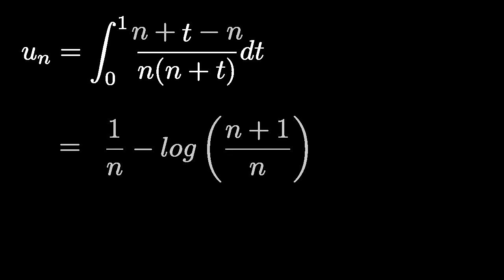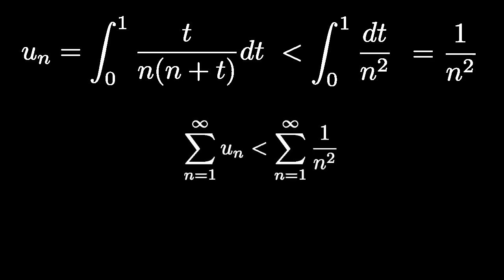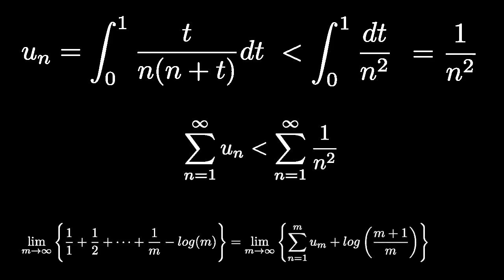Looking at the original definition of u_n, we see that u_n is less than 1 over N squared, and therefore the sum of u_n from N equals 1 to infinity converges. And it's easy to see that this sum is equal to the Euler-Mascheroni constant.